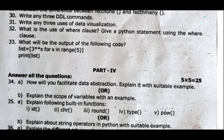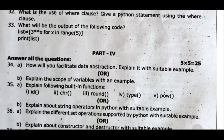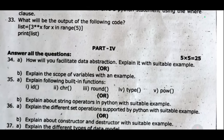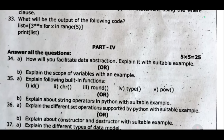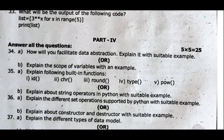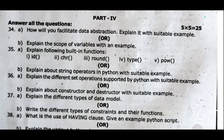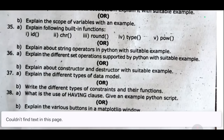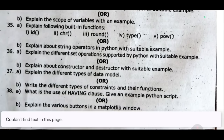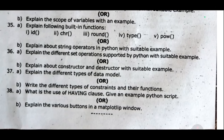Part Four is five marks. Question 34: Explain many functions — explain about string operators in Python with suitable examples. Question 35: While explaining, discuss different set operations supported by Python with suitable examples, or explain non-destructive and destructive operations with suitable examples. Question 36: Explain different types of data models, or write the different types of constraints and their functions. Question 37: Explain the use of HAVING clause and give an example Python script, or explain the various buttons in the matplotlib window.